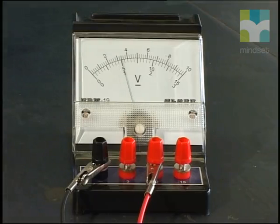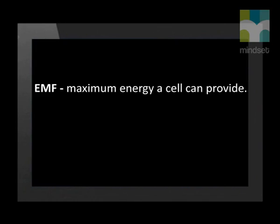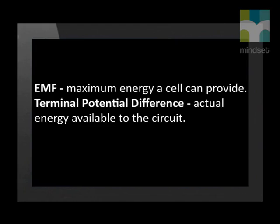When we measure a cell's potential energy we use a voltmeter. This measurement shows the maximum amount of energy that the cell can supply — this is called the EMF of the cell. However, the cell itself has resistance, so when the cell is connected into a circuit, some of the cell's energy is used to move charges through the cell, and there is less energy available to the circuit. The remaining energy available to the circuit is called the terminal potential difference, measured in volts. To summarize: EMF is the maximum amount of energy a cell can provide; terminal potential difference is the actual energy available to the circuit. Both are measured in volts.